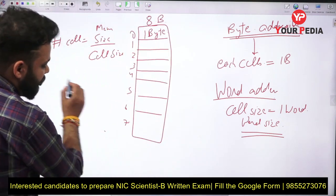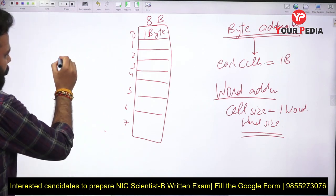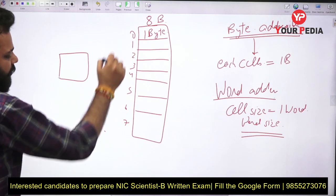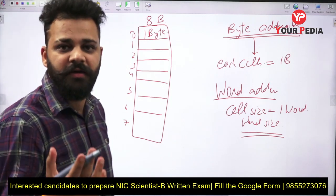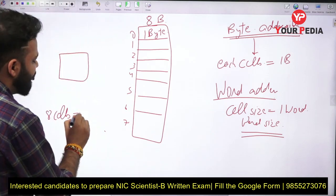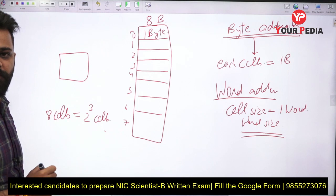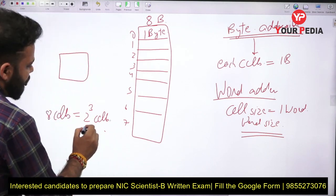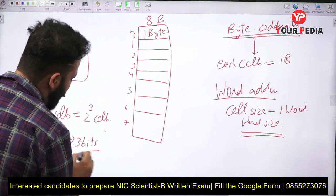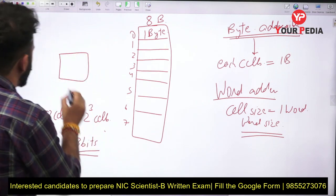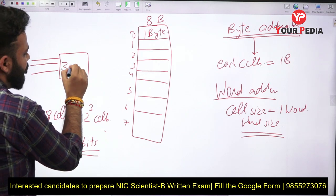Now for 8 cells, the method we use to find the address size is: 8 cells can be written as 2 raised to the power 3 cells, which means 3 bits will be required for the address. There will be 3 lines here and the decoder will be a 3-to-2³ decoder.